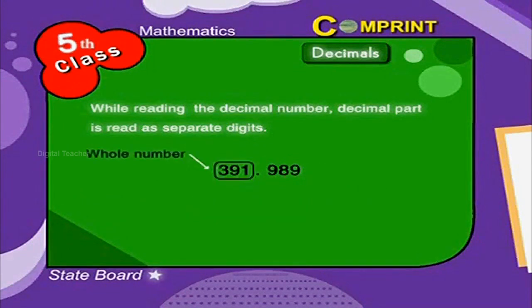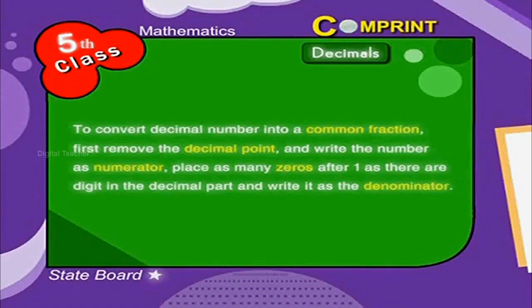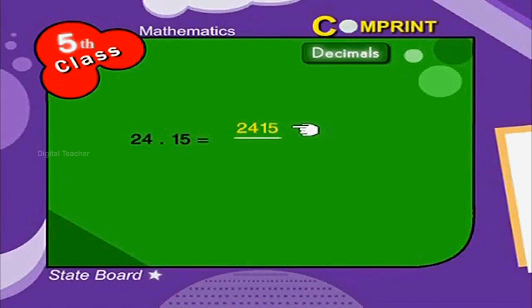In 391.989, 391 is the whole number part and 989 is the decimal part. To convert a decimal number into a common fraction: first remove the decimal point and write the number as the numerator. Then place as many zeros after 1 as there are digits in the decimal part, and write it as the denominator. For example, 24.15 can be written as 2415 by 100.